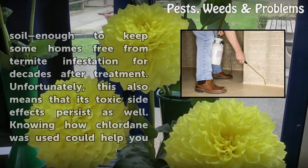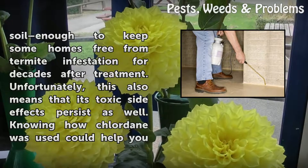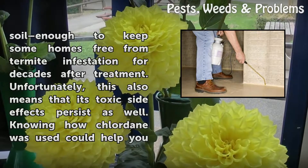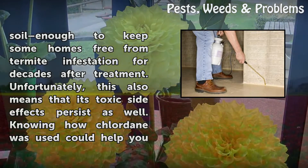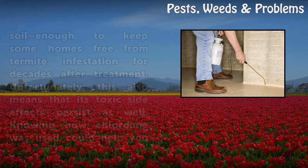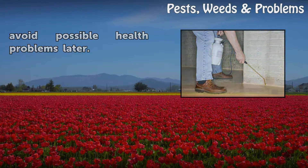Chlordane is highly persistent in soil, enough to keep some homes free from termite infestation for decades after treatment. Unfortunately, this also means that its toxic side effects persist as well. Knowing how Chlordane was used could help you avoid possible health problems later.